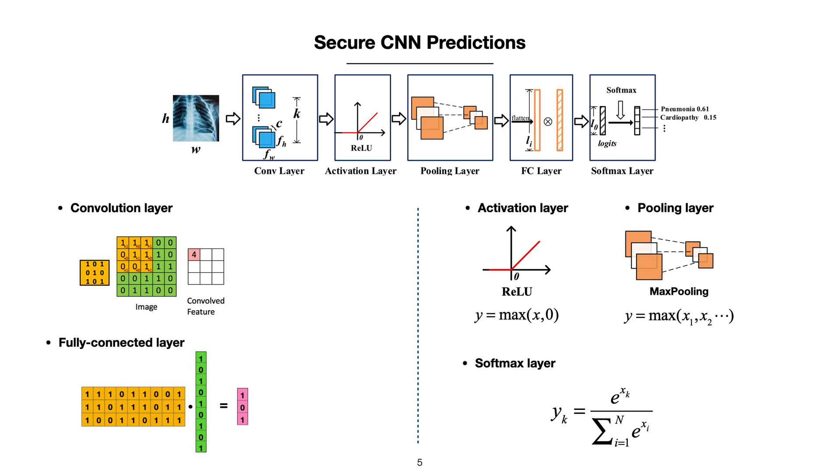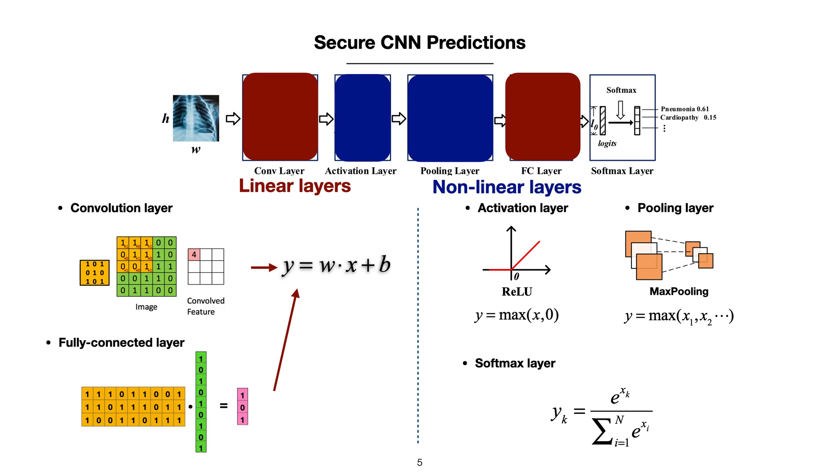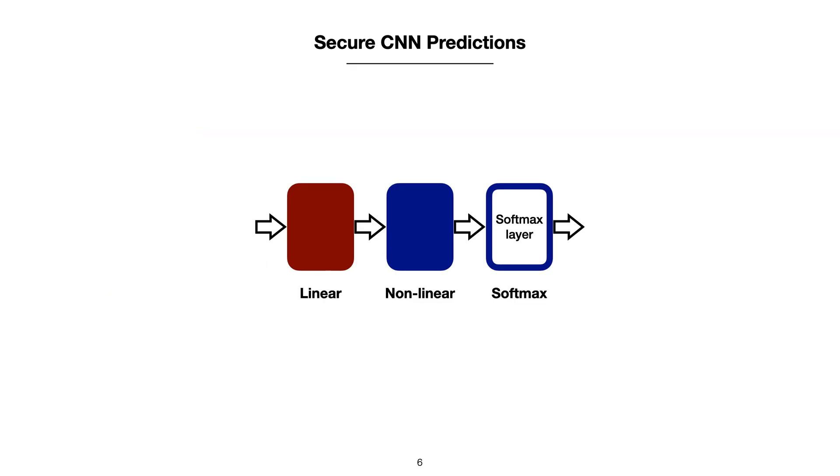Here is a toy-CNN model for illustration of our scheme. For convolutional and fully connected layers, we refer to them as linear layers. For ReLU and max pooling layers, they are nonlinear layers. For linear layers, we use homomorphic encryption. And for nonlinear and softmax layers, we use secure two-party computation.